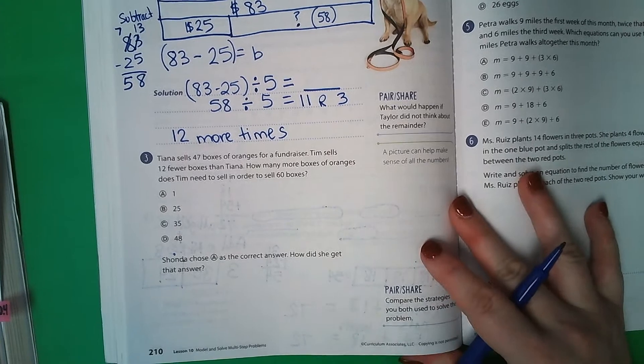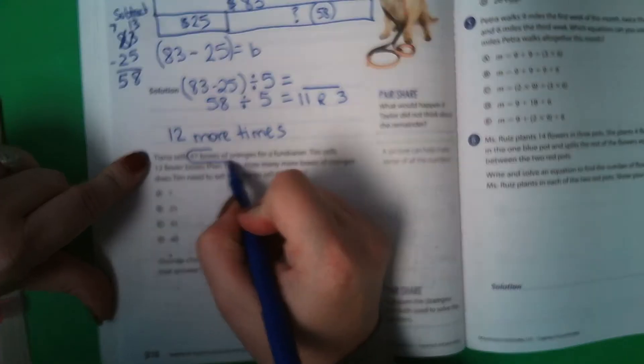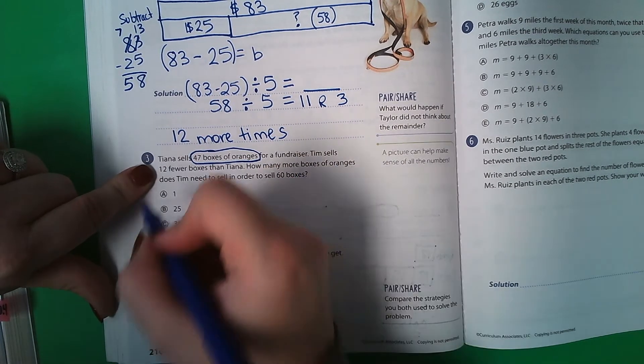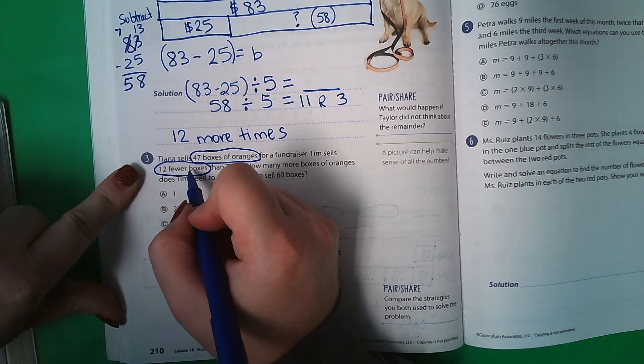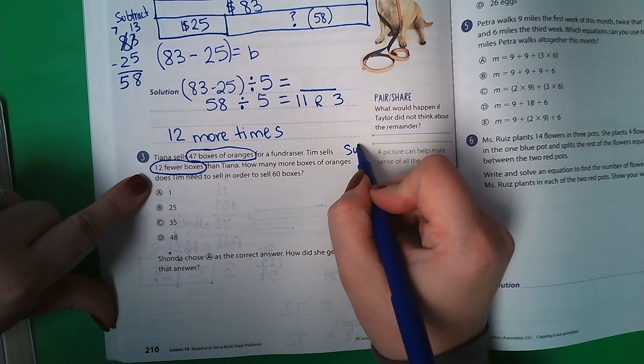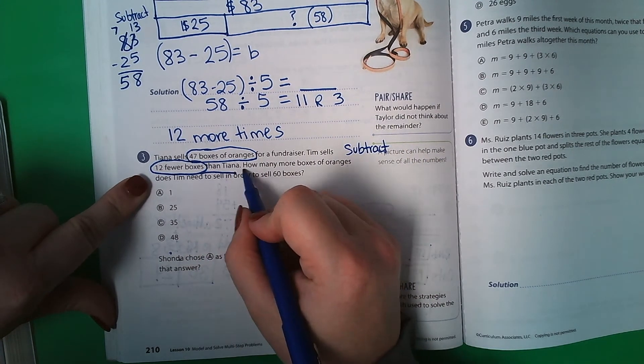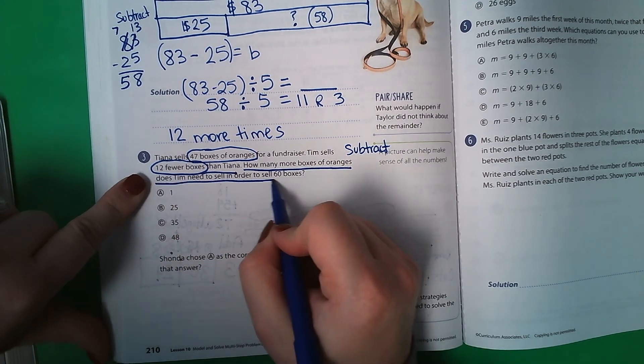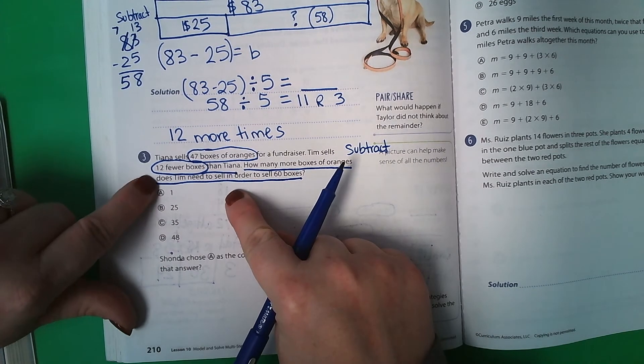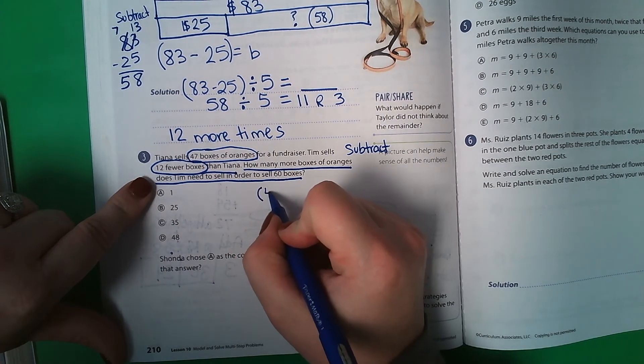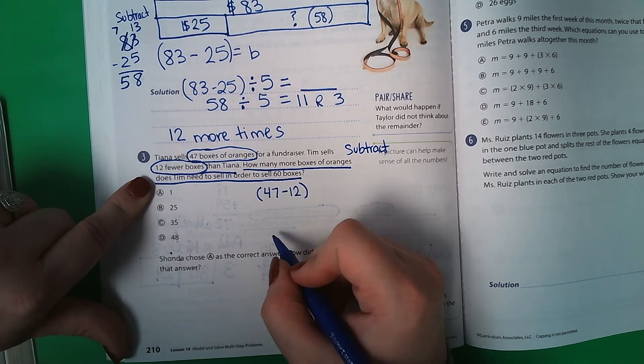Number 3. Tiana sells 47 boxes of oranges for the fundraiser. Tim sells 12 fewer. Fewer means less. Less usually means subtract than Tiana. How many more boxes of oranges does Tim need to sell in order to sell 60 boxes? So this is a two-part problem. First, we have to do 47 minus 12 to find out how many he sold so far.